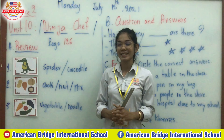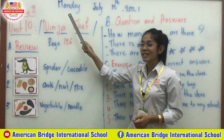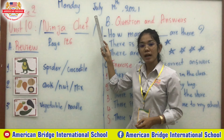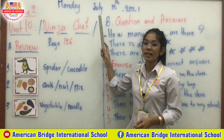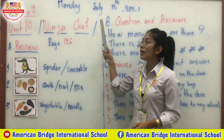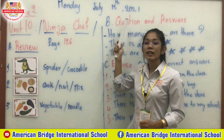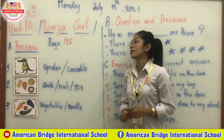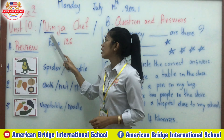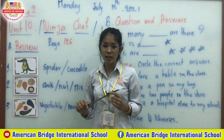Let's read the date together. Today is Monday — spell it: M-O-N-D-A-Y. The month is July — J-U-L-Y. The date is 12, and the year is 2021. Now let's review page 126.